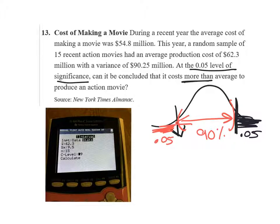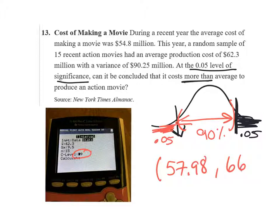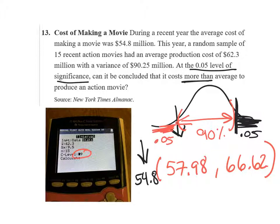You can see in the calculator input that we have the 0.9 confidence level entered, along with the rest of the data in millions. When you hit Calculate, you get the confidence interval: 57.98 million to 66.62 million. Our hypothesized value of $54.8 million is down here — it's outside the interval. When something is outside the interval, you reject.